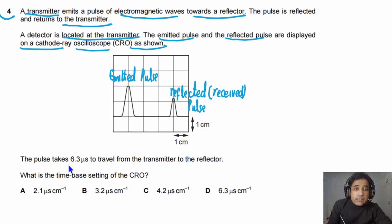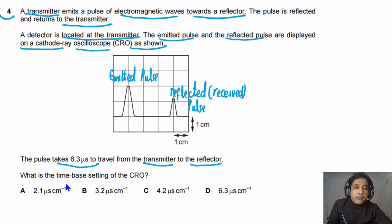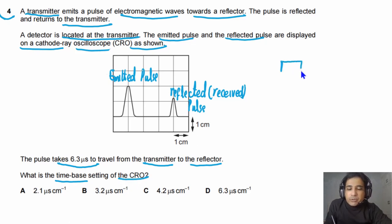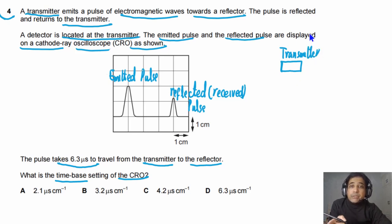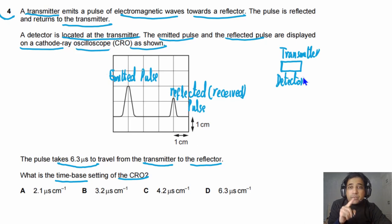For this question, it is also given that the pulse takes 6.3 microseconds to travel from transmitter to the reflector, and we need to find the time-base setting of the CRO. We can sketch: here is the transmitter, and the detector is also located at the same place — so transmitter and detector are co-located.